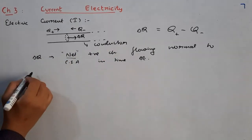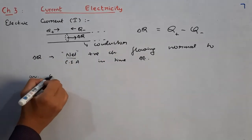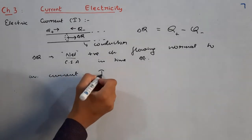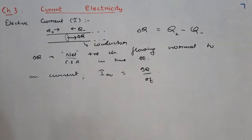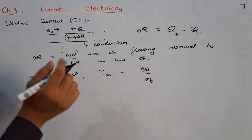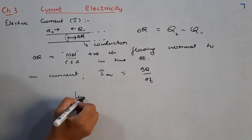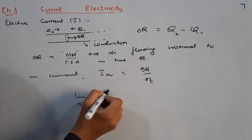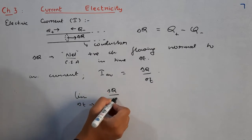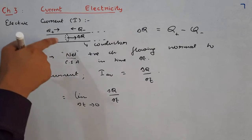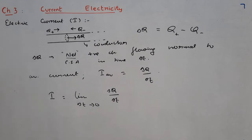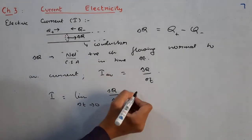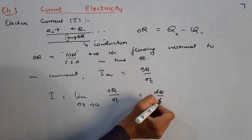If this be delta q, then the average current during this time we define as I average = delta q / delta t. And if we reduce this time interval to be very small and we choose the limiting case — limit delta t tends to 0 of delta q upon delta t — we get the value of current at a particular instant, and that we write as instantaneous current. So this is the definition for current, electric current, and this we can write as dq upon dt.